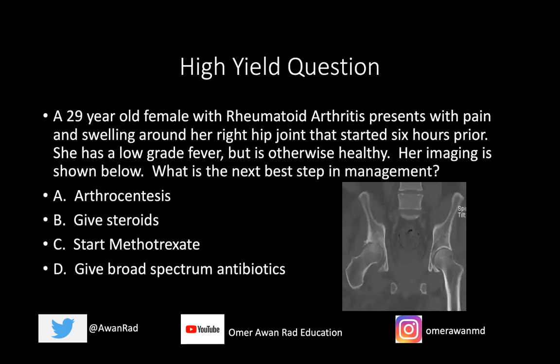So this is a 29-year-old female with rheumatoid arthritis presenting with pain and swelling around her right hip joint that started six hours prior. She has a low-grade fever but is otherwise healthy. Her imaging is shown below — a CT image through the pelvis showing the right and left hip. What's the next best step in management? Is it arthrocentesis, steroids, methotrexate, or broad-spectrum antibiotics? I promise we'll come back to this question at the very end.